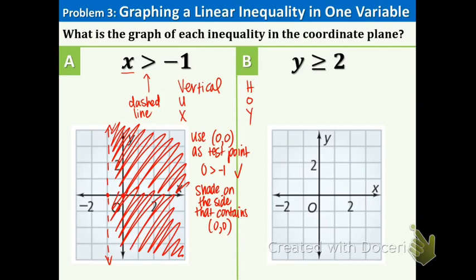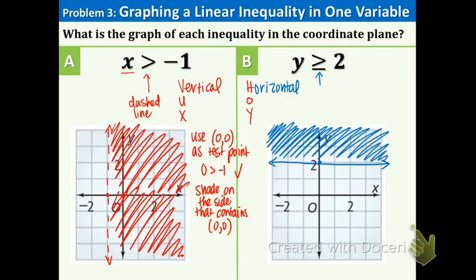Now let's look at part b: y ≥ 2. This is a horizontal line because it starts with y. This time there is a line underneath the symbol, so we will have a solid line rather than a dashed line. Draw a solid horizontal line through 2 on the y-axis. To determine where to shade, use the test point (0, 0): is 0 ≥ 2? No, that is not true. Therefore (0, 0) is not in the shaded area, so we shade above the line.